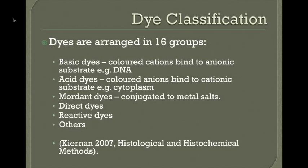Dyes can be classified in a number of ways. Referring to Kieran's 2007 histological and histochemical methods textbook, dyes are arranged into 16 groups. The more commonly used in basic histology practicals include basic dyes, acid dyes, and mordant dyes. Basic dyes are coloured cation components — positively charged dyes that combine with negatively charged ionic substrates.